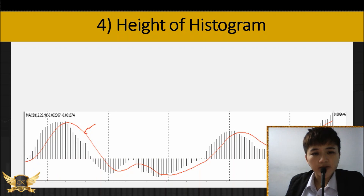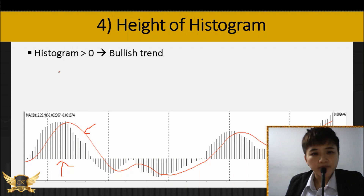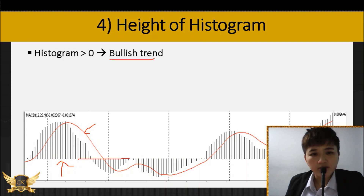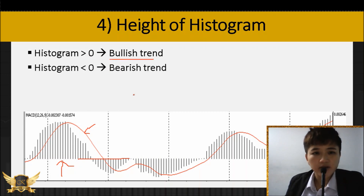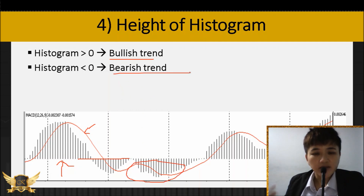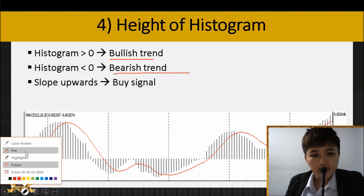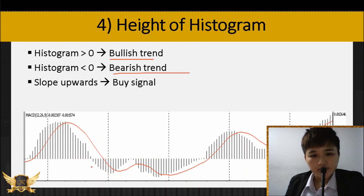The fourth way to read MACD is using the histogram. Just ignore the signal line for now and focus on the histogram. Simply put, when the histogram is above the zero line it tells you the trend is going bullish; when the histogram is below, the bearish trend is going to continue.